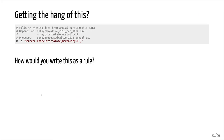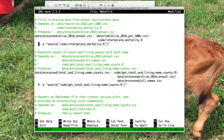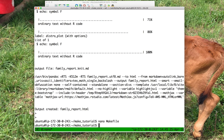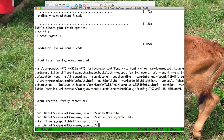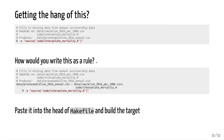Here's a third rule. Go ahead and pause the video and make the rule to generate the data/processed/alive_2016_annual.CSV file. Paste this into your make file and see if you can get it to work. Convert what we had in analysis_driver.bash, put it into your make file, make sure it's properly formatted, and then go ahead and run the make command. Maybe change interpolate_mortality.R and make sure that everything works the way you would expect it to. Hopefully you're able to add this rule to generate the alive_2016_annual.CSV file — if we save it, quit out, and do make family_report.html, everything is up to date.